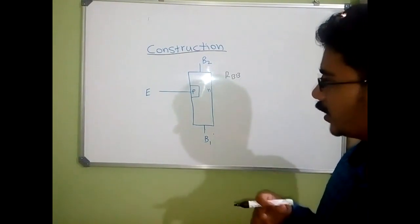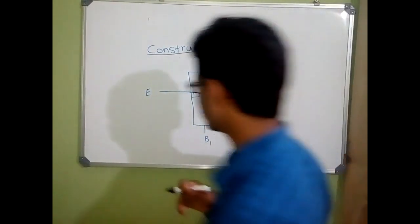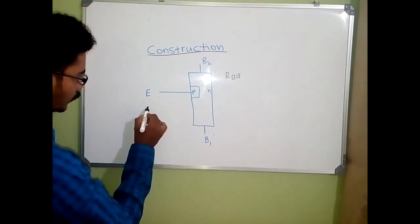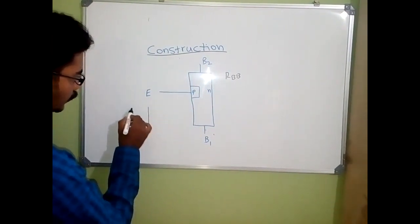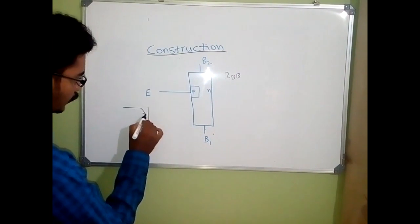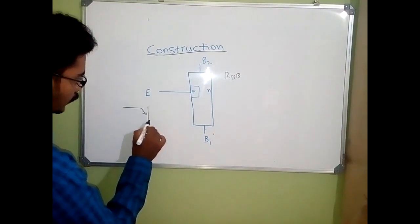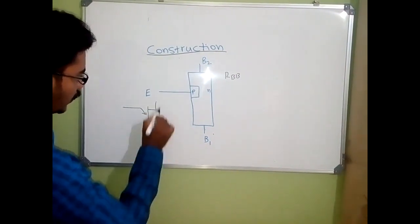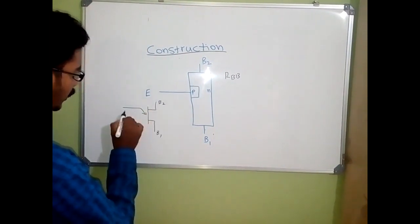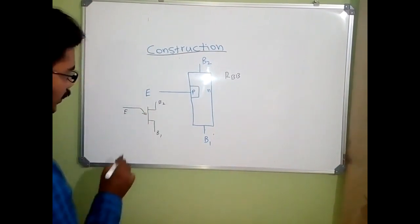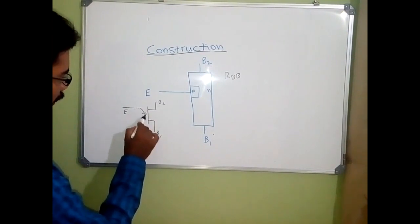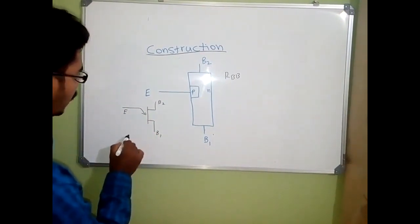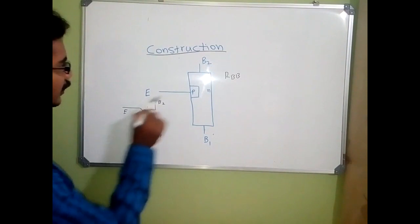Symbolically, we can represent a UJT with three terminals: B1, B2, and the emitter. The emitter is shown with an arrow. This is the symbolic representation of UJT.